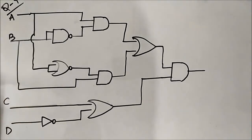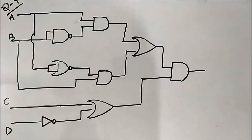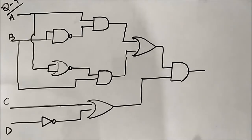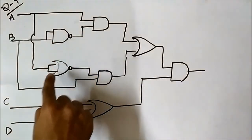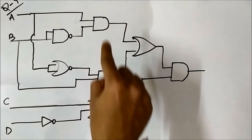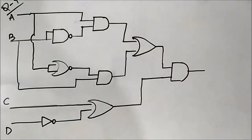This is question number nine, from which we have to determine the boolean output. This question is very good because we have all types of gates — basic logic gates, universal logic gates, everything. We have an AND gate, an OR gate, a NOT gate or inverter, two AND gates, two OR gates, and finally an AND gate at last.